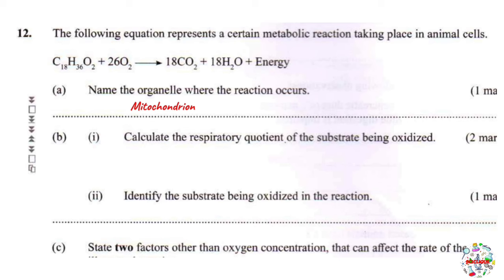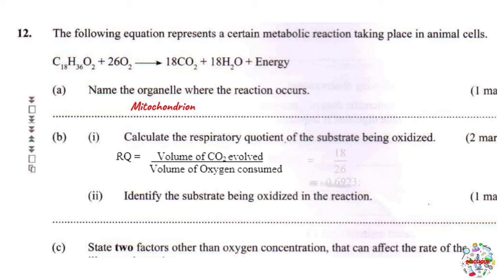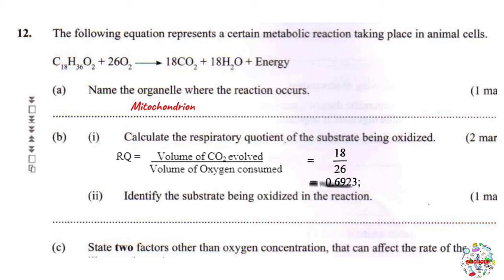Part B1: calculate the respiratory quotient of the substrate being oxidized. The respiratory quotient is the ratio of the volume of carbon dioxide produced against the volume of oxygen used during respiration. From the equation, 26 moles of oxygen are used and 18 moles of carbon dioxide are produced. So RQ = 18/26, giving us 0.6923. When rounding, the minimum should be to two decimal places.